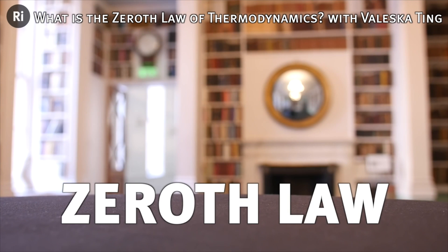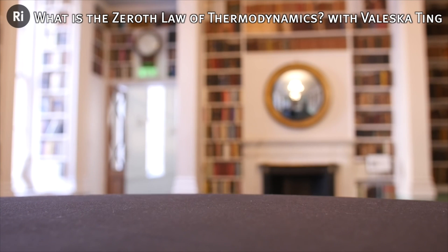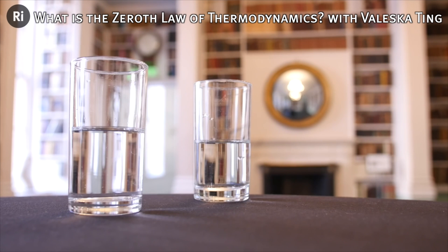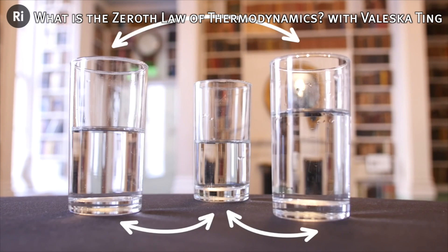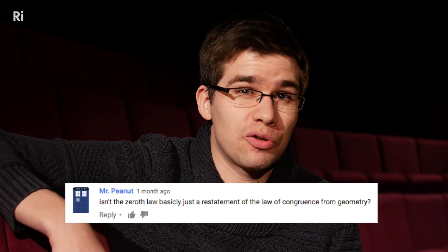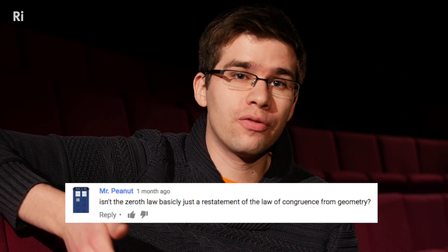The zeroth law of thermodynamics is actually an observation, and states that if two thermodynamic systems are in thermal equilibrium with a third system, they are also in thermal equilibrium with each other. Mr. Peanut asked: is the zeroth law basically just a restatement of the law of congruence from geometry? Yes, in a way — it's called the transitive property. But not all systems are transitive, so the zeroth law is a really important thing to state.